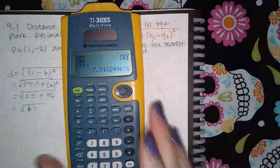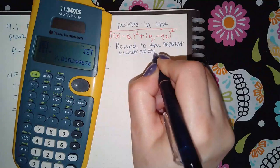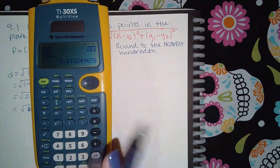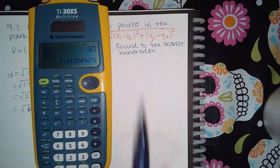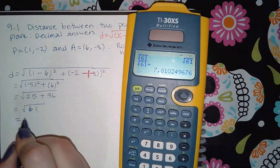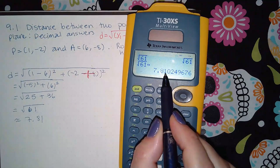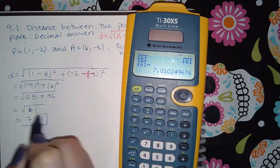So it says round to the nearest hundredth. So I get 7.81 because that zero is not going to affect this one or six hundred. So I get 7.81.